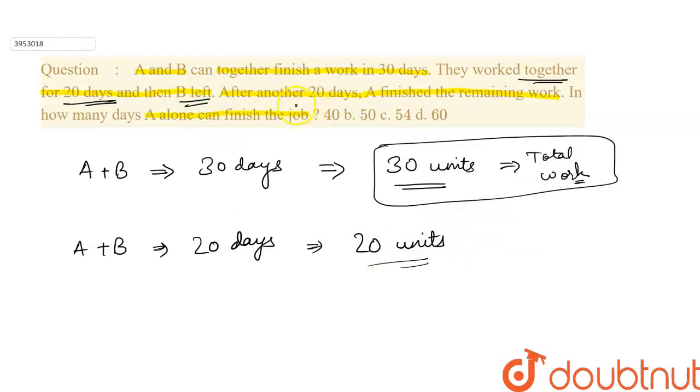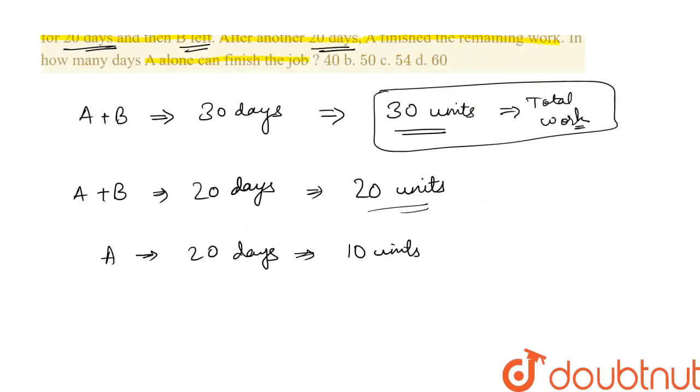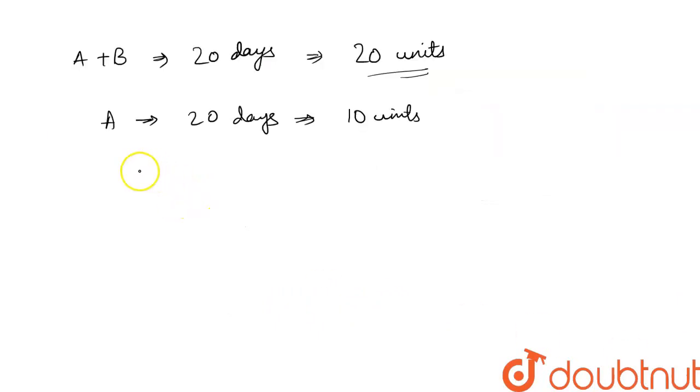A does 10 units in 20 days. So 10 units in 20 days equals 10 upon 20, which is 1 by 2 units per day. One day, half unit.